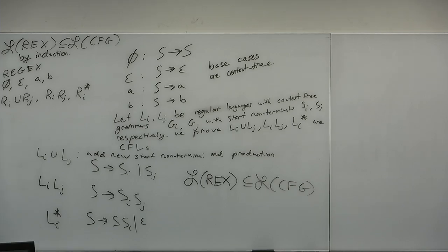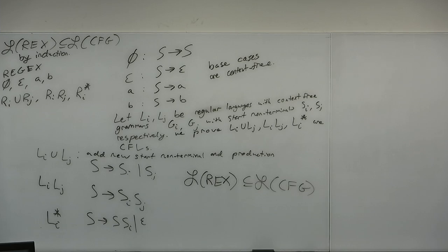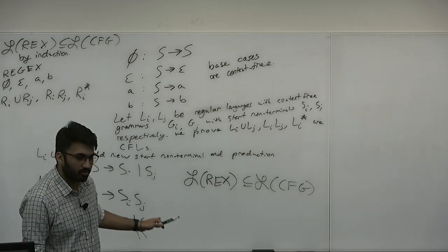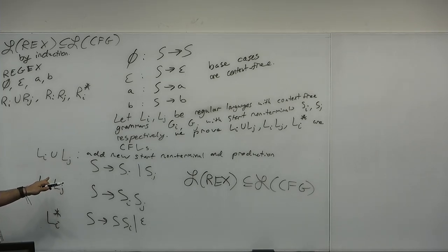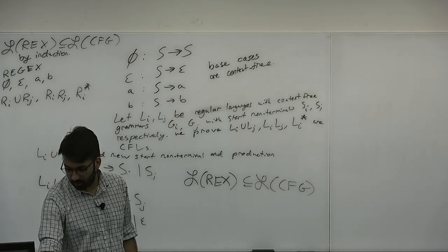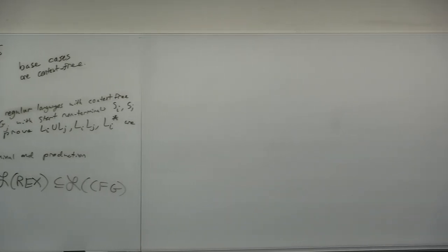So now we know the context-free languages are strictly more powerful than the regular languages — not just different and weird, but a proper superset. Any questions on this proof before we move on? It turns out the context-free languages are closed under union, concatenation, and star, but they are NOT closed under intersection or complement.